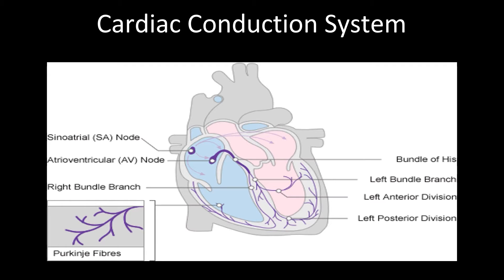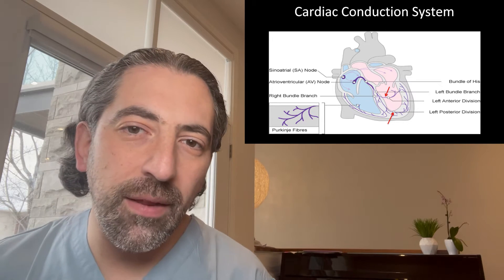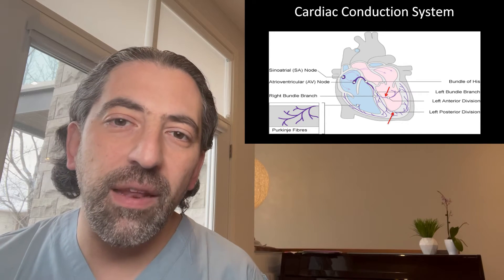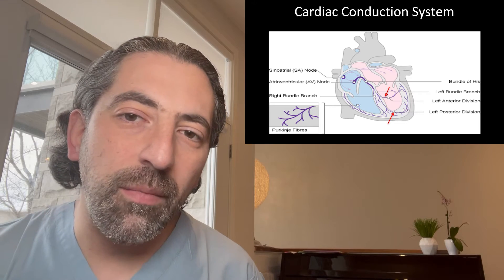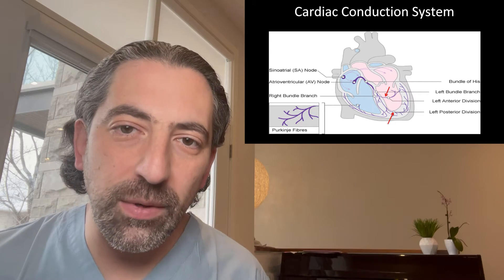Now let's discuss what happens if specific fascicles within the left bundle get blocked — so instead of complete left bundle branch block, you get left anterior fascicle block or left posterior fascicle block. The left bundle is classically described as consisting of a left anterior fascicle, which supplies the anterolateral portion of the left ventricle, and a left posterior fascicle, which supplies the inferoseptal portion. It's slightly more complicated with fanning of the left bundle, but this anatomical model is useful for understanding the ECG.